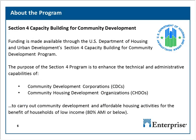This grant opportunity is made possible by the U.S. Department of Housing and Urban Development Section 4 Capacity Building for Community Development Program. Section 4 is named after Section 4 of the HUD Demonstration Act of 1993. The purpose of this program is to enhance the technical and administrative capabilities of community development corporations and community housing development organizations to carry out community development and affordable housing activities for households of low income, defined as 80% area median income or below.